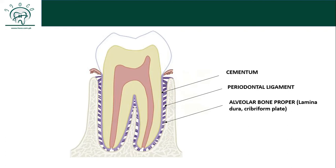We also call alveolar bone proper lamina dura or cribriform plate. We call it lamina dura because it is a highly mineralized layer and therefore appears as a radio-opaque thick sheet in radiographs — lamina means sheet, dura means thick. We also call it cribriform plate because it is a very porous structure, and because of these pores, PDL acts as a shock absorber.